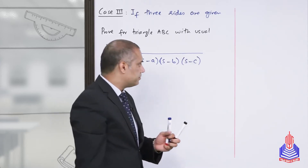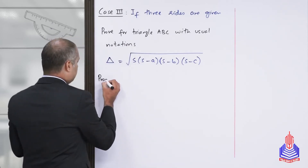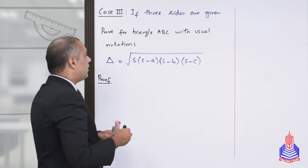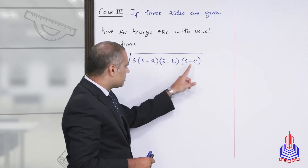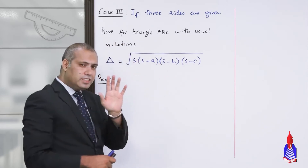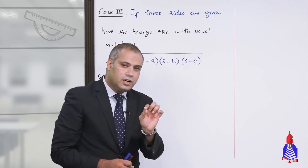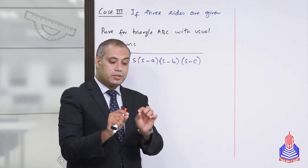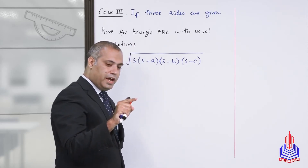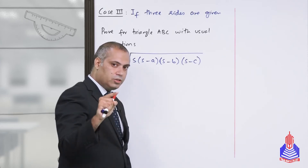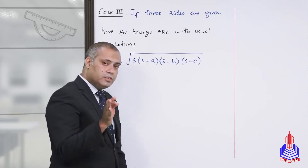Students, notice that in this formula there is no mention of angles — only sides a, b, and c appear. Also notice there is s. What is s? You may recall: s is half of the perimeter of the triangle. So the formula for s is: s = (a + b + c) / 2.